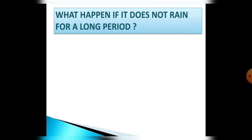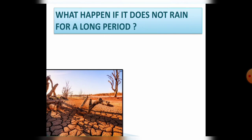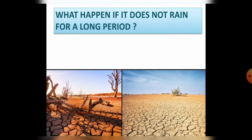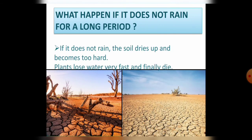But what will happen if it does not rain for a longer period of time? The soil will dry up and become too hard. Plants will lose water very fast and finally they will die. There will be no irrigated land. Mostly this kind of situation is seen in desert areas because there is no availability of water.